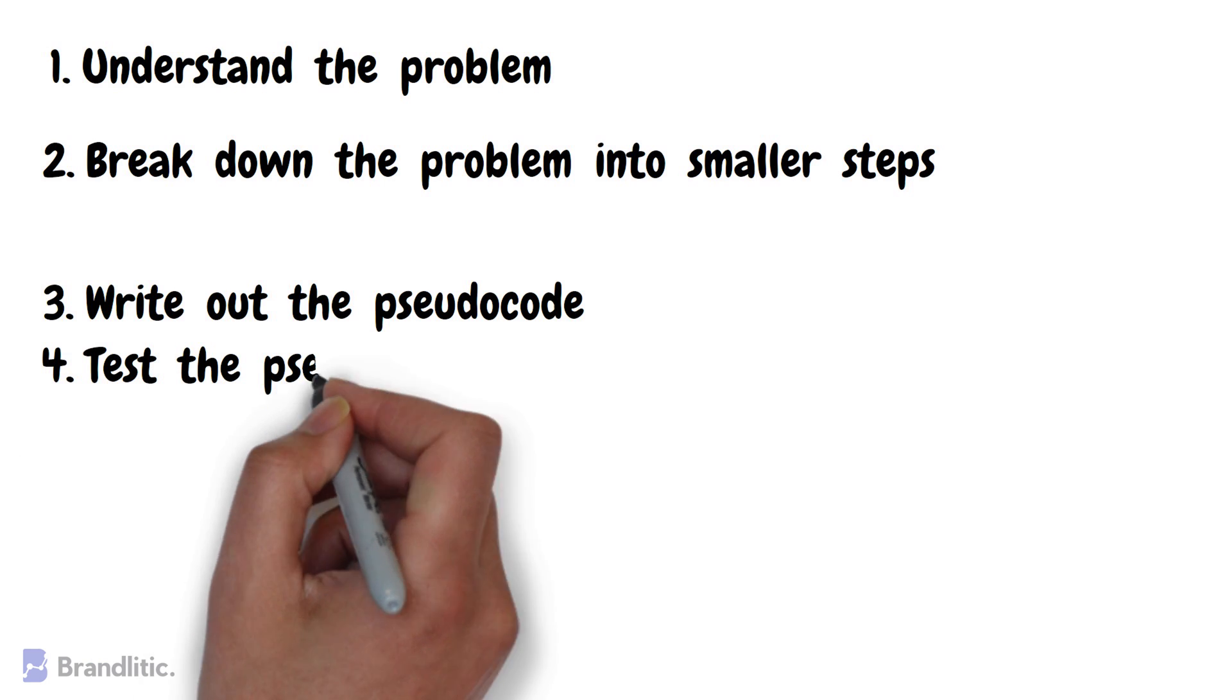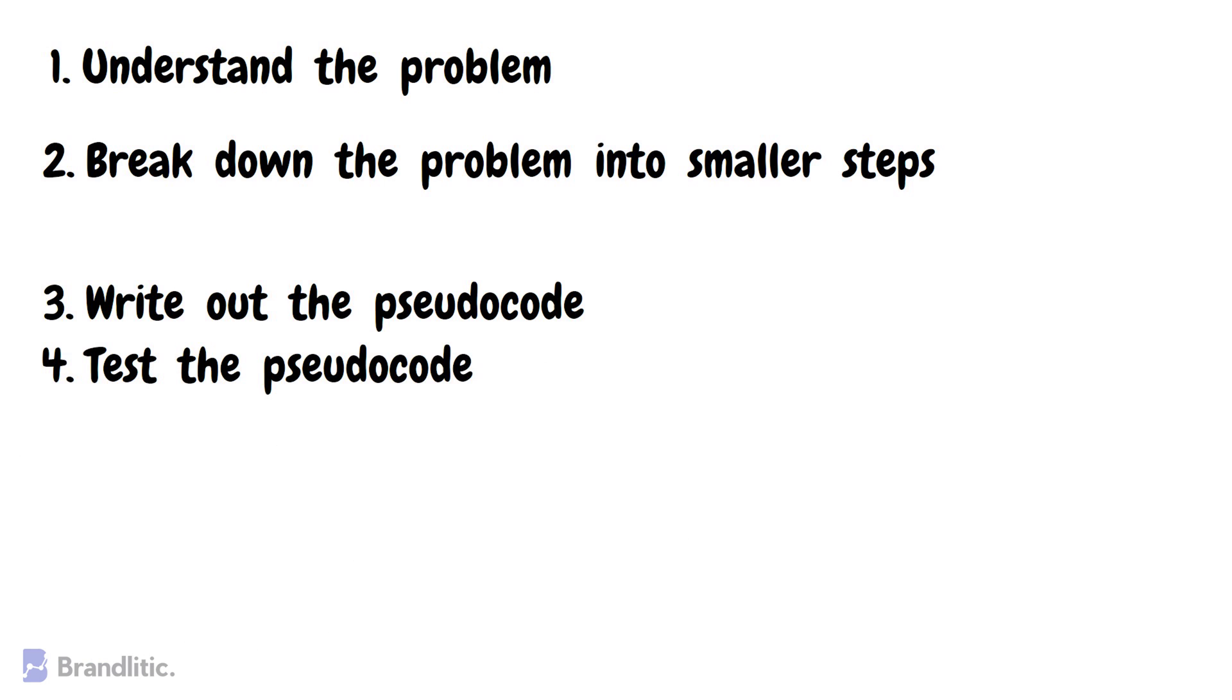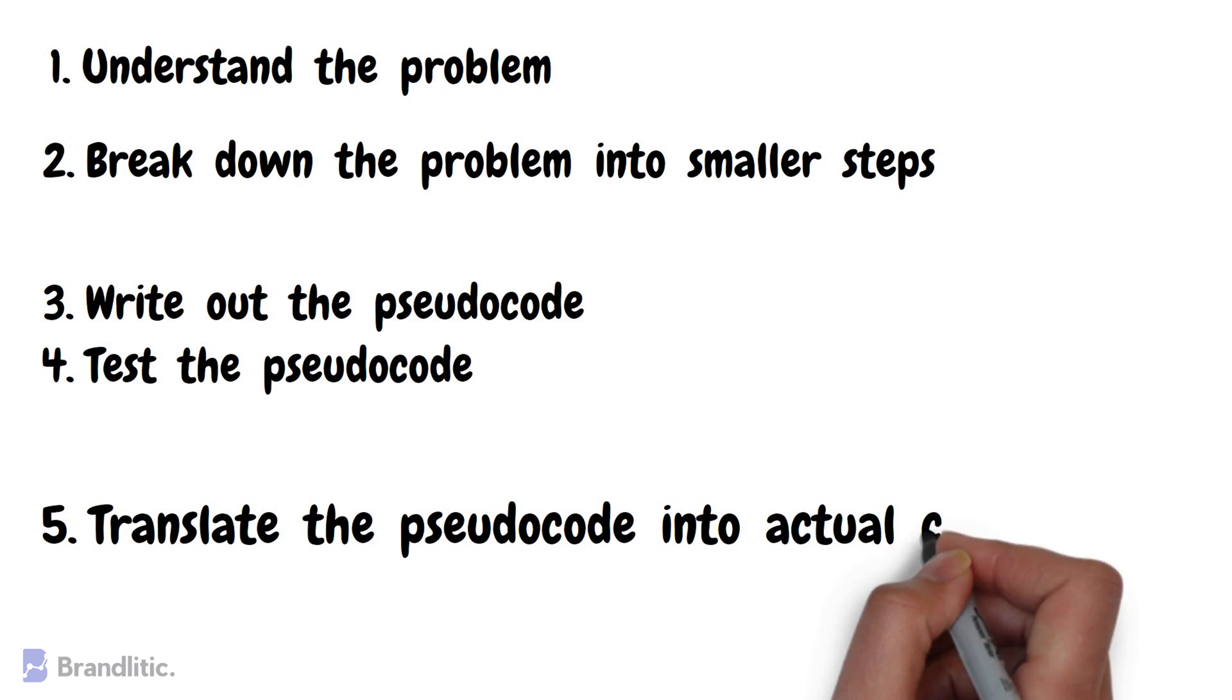Step four, test the pseudocode. Once you've written out the pseudocode, it's important to test it to make sure it works as intended. Step five, translate the pseudocode into actual code. Finally, once you've tested the pseudocode and ensured that it works, you can start translating it into actual code using your programming language of choice.